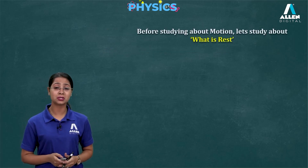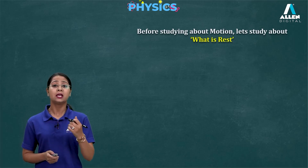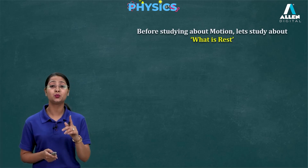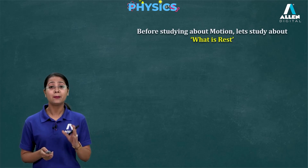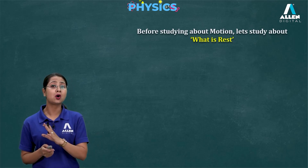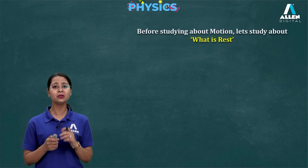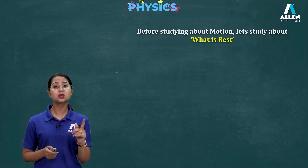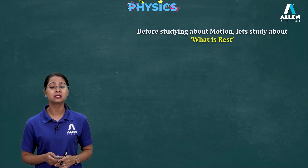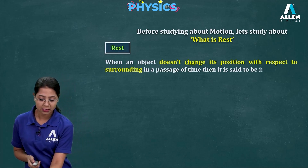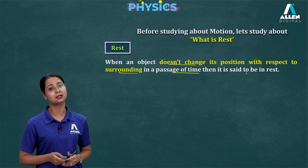But before studying about motion, we have to understand what is rest. What is rest? When the object does not change its position with time — we know that time is always running, it can never stop — but if with the passing of time the object is not changing its position, then the object is said to be at rest. Just observe the walls of your room: you are sitting in the room and the walls are not moving because there is no change in their position. So when the object does not change its position with respect to its surroundings over a passage of time, it is said to be at rest.